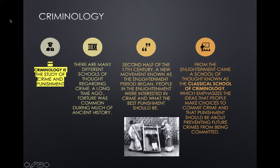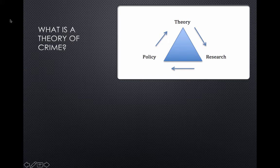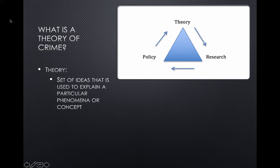This is a really important page for remembering a lot about the study of criminology, the classical school of criminology, and the Enlightenment period — there are going to be a couple of questions on the quiz from this page alone. So what is the theory of crime? Theory of crime is a set of ideas used to explain a particular phenomena or concept. That is something you're going to see again, so remember that.